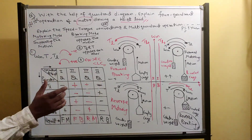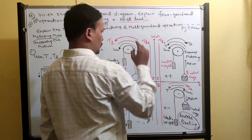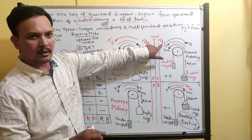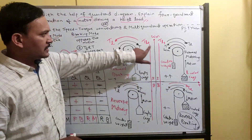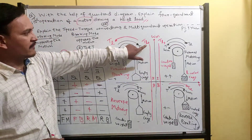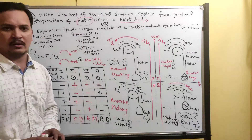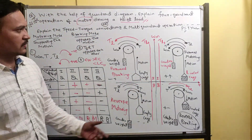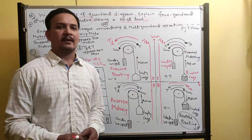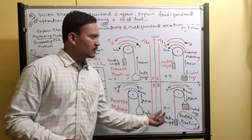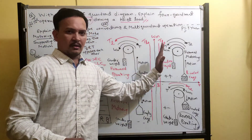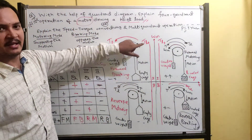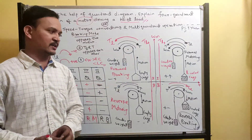TL1 is the load torque when the cage is loaded. TL2 is the load torque when the cage is empty.